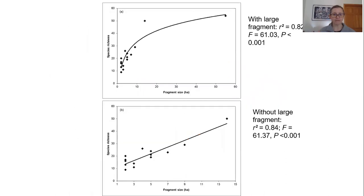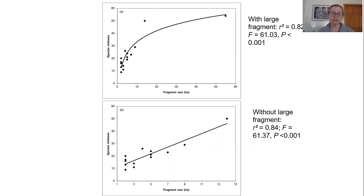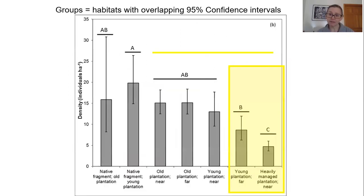Here is what we found. Looking at the fragments, we found patterns of species accumulation consistent with the species-area relationship, and these were very significant. The top of the curve includes the larger fragment, and we're starting to see a plateau in species richness, but basically increasing species richness with fragment size.